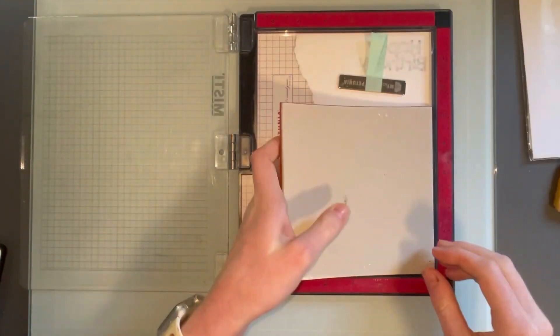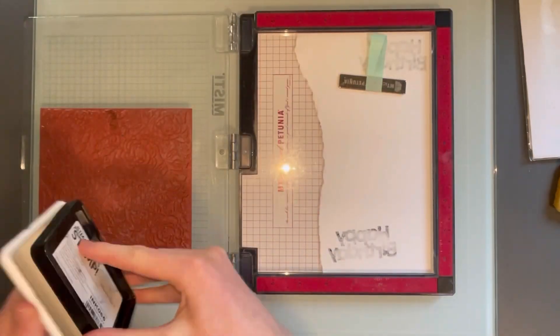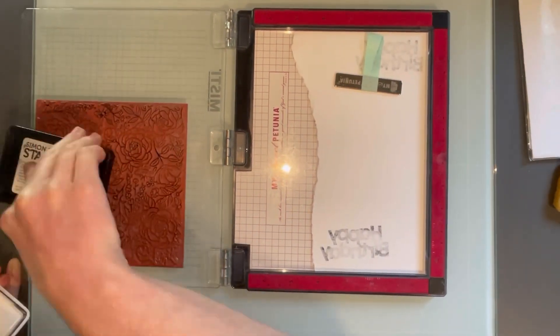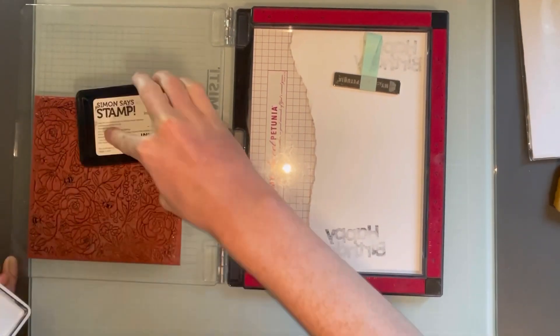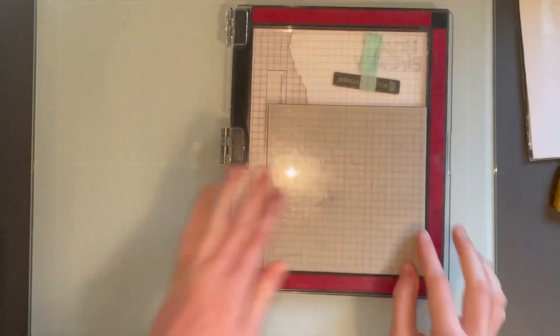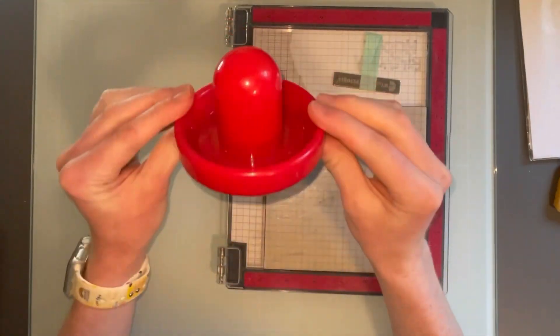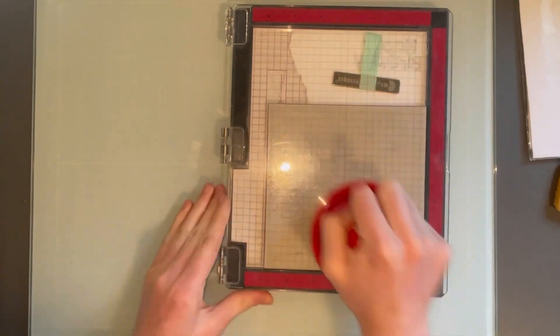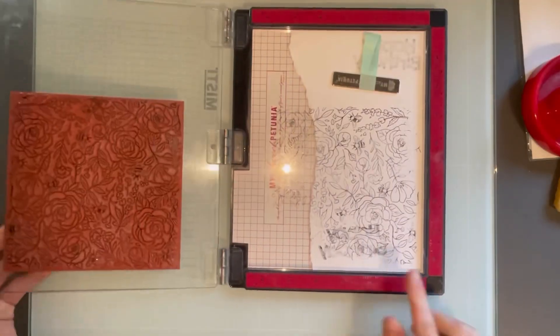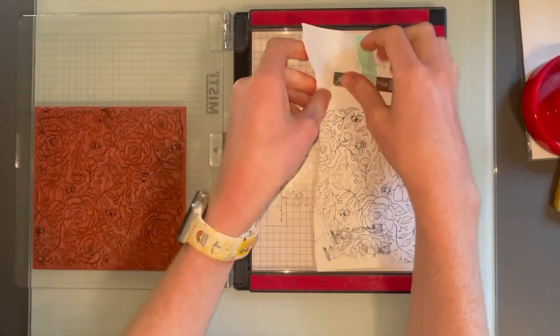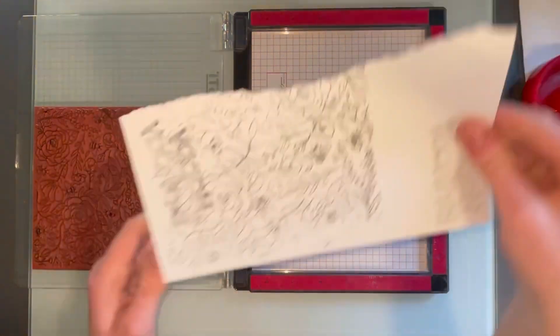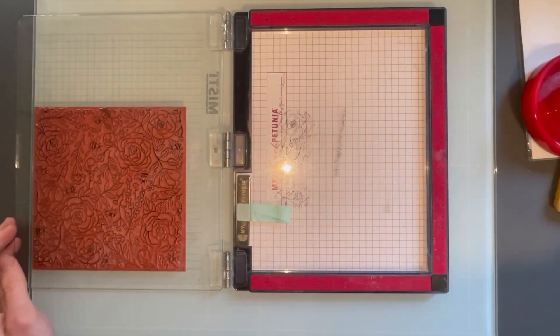This is a background stamp. It comes on a foam pad and that has a rubber stamp, which is the red part of the stamp. And you can just add the ink over the stamp and then stamp it.